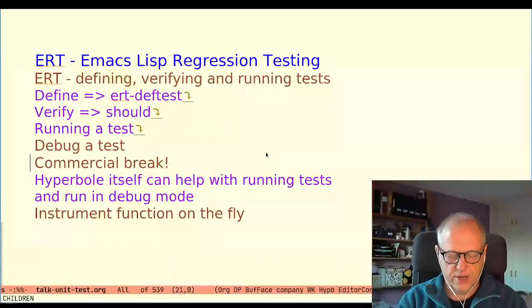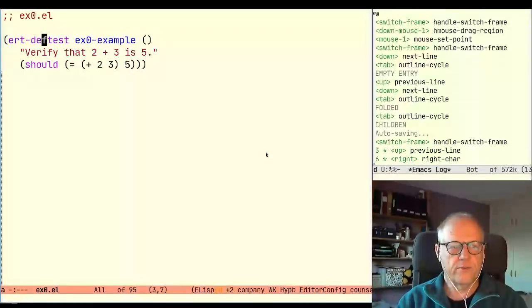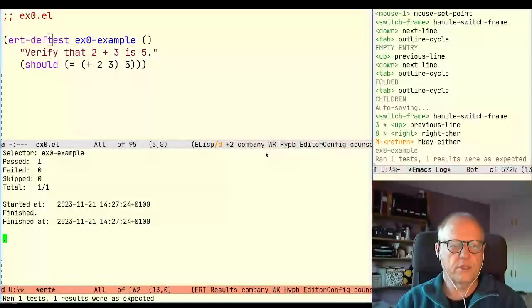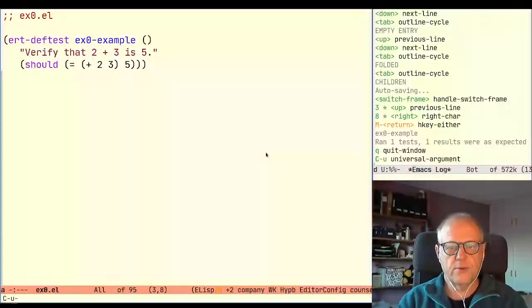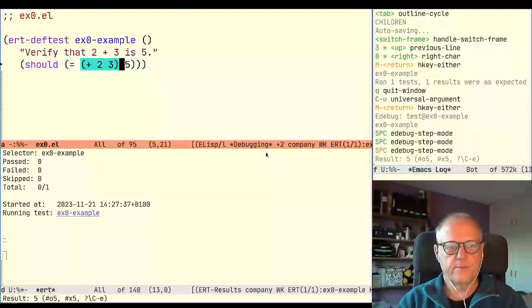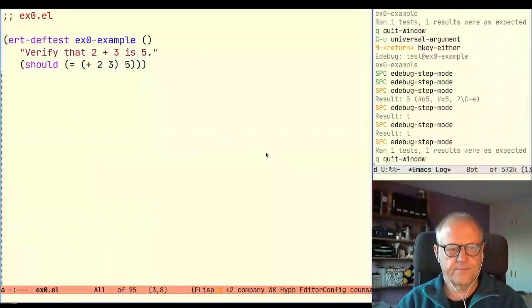So let's try that. So we move the cursor here and then we type meta return and boom the test case was executed. And to run it in debug mode which is control-u meta return to get the assist key and then we're in the debugger.